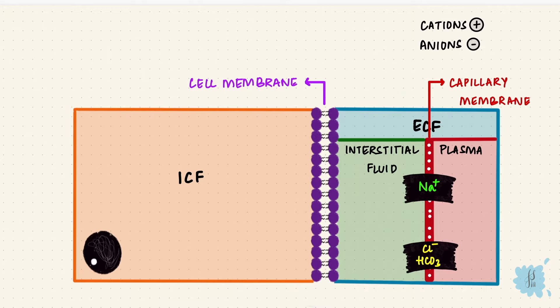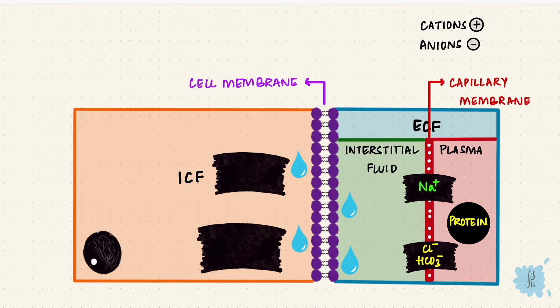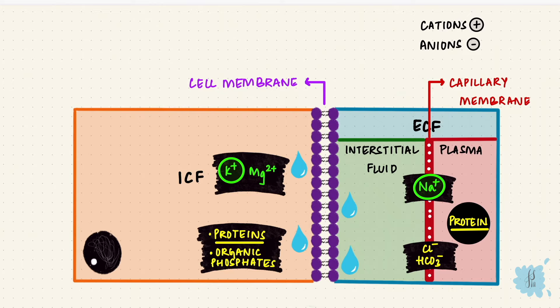The cell membrane is selectively permeable — it's freely permeable to water but impermeable to a lot of solutes, so the composition of the ICF and the ECF are different. In the ICF, the major cations are potassium and magnesium, versus sodium in the ECF. Inside the cell, the anions are organic phosphates like ATP and ADP, and proteins. So proteins are inside the cells and in the plasma, but the interstitial fluid has very little protein. Potassium is higher inside the cells while sodium is higher outside, but in both compartments the concentration of cations and anions are equal, keeping them overall electrically neutral.